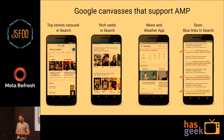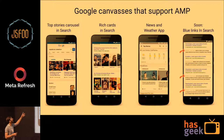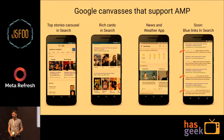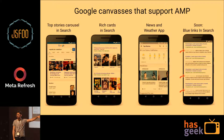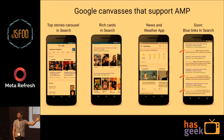The Google surfaces that support AMP include the top stories carousel, rich cards in search, the news and weather app, and soon — importantly — blue links in search. Those are just the organic search results. If we find an AMP-equivalent page, we'll open it in a viewer almost instantly because it's preloaded.